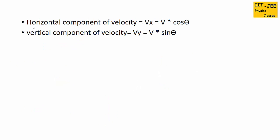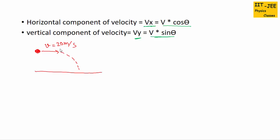We need to split the velocity into horizontal and vertical components. For the horizontal component Vx, the formula is V·cosθ, and for the vertical component Vy, the formula is V·sinθ. For example, if a ball is launched horizontally with velocity 20 meters per second, it has only a horizontal component, so Vx equals 20 m/s and Vy equals zero for horizontally launched projectiles.